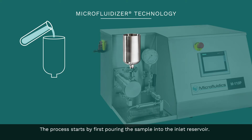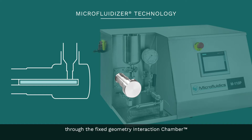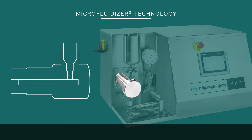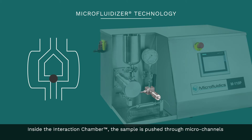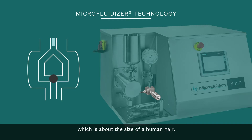The process starts by first pouring the sample into the inlet reservoir. A constant high-pressure intensifier pump forces the liquid sample through the fixed geometry interaction chamber at very high pressures of up to 30,000 PSI. Inside the interaction chamber, the sample is pushed through microchannels, which have been engineered to be typically 75 to 100 microns in nominal dimension, which is about the size of a human hair.